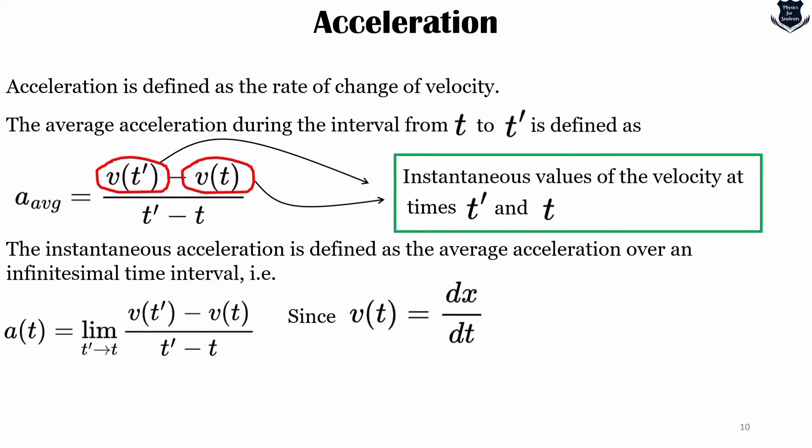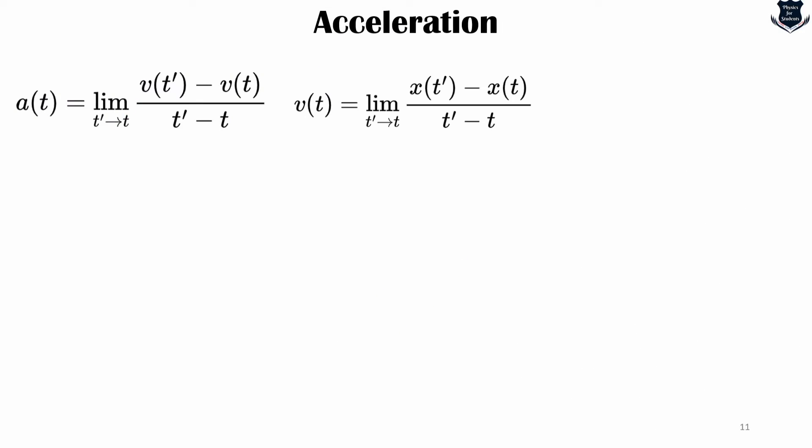Since we know that v(t) equals dx/dt, we can write using the notation of calculus as a(t) equals d²x/dt², and this is basically what we call the shorthand of d/dt(dx/dt).